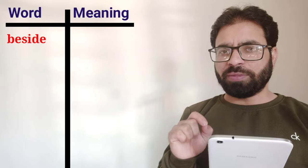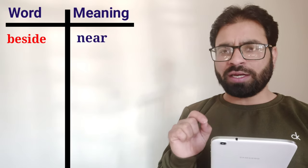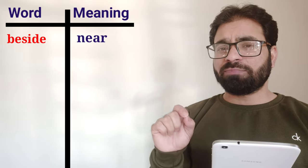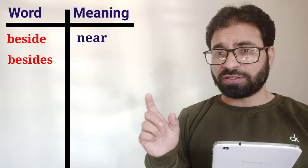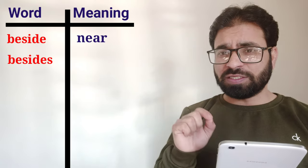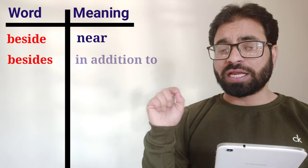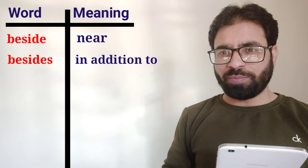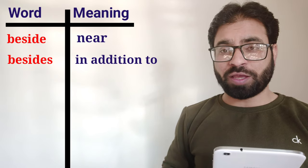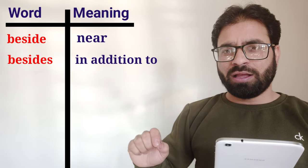Let me now give you the meaning of difficult words. The first word is 'beside,' which means 'near.' We also have the word 'besides.' There is a difference between the two words. 'Beside' means near, as in 'Come and sit beside me,' meaning come and sit near me.